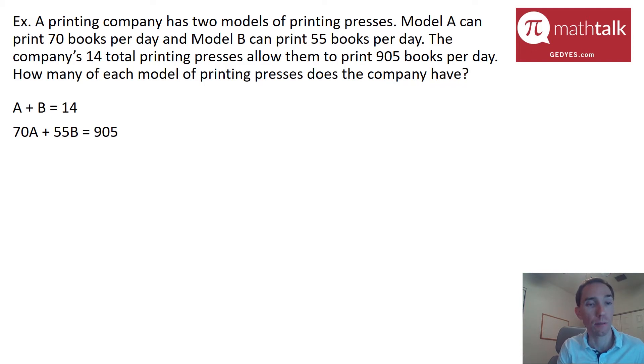So again, the idea with the system of equations is we really want to make sure that one of the variables has the same coefficient or opposite numbers. So this time I'm going to go ahead and look at getting rid of B because in my second equation, the coefficient is smaller. So that means I have to multiply the first equation by a smaller number. So I'm going to go ahead and multiply the first one by 55. And again, multiply the entire equation by 55. I get 55A plus 55B is 770, which is just 14 times 55.